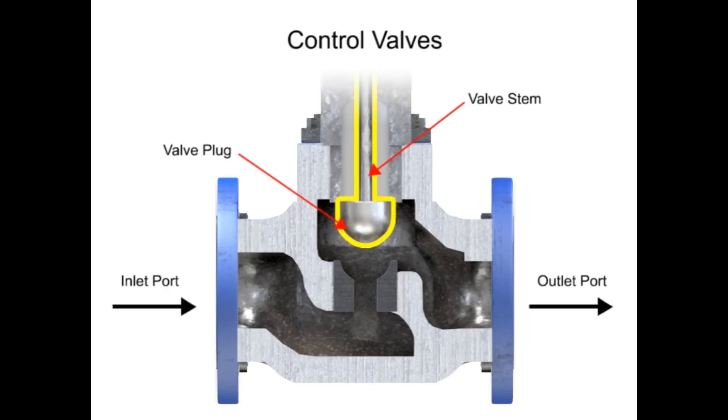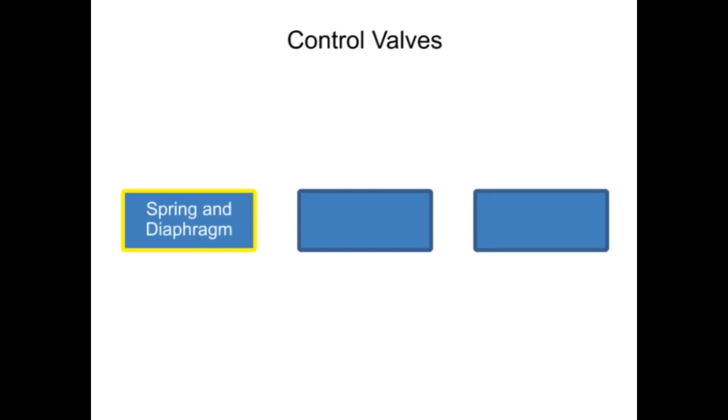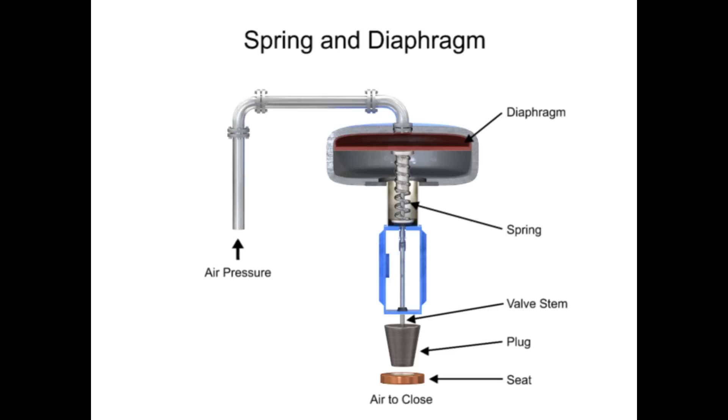Three actuator types are used in control valves and they include spring and diaphragm, solenoid, and motor. As the name suggests, the spring and diaphragm actuator uses a spring and a diaphragm to move the valve stem and plug.